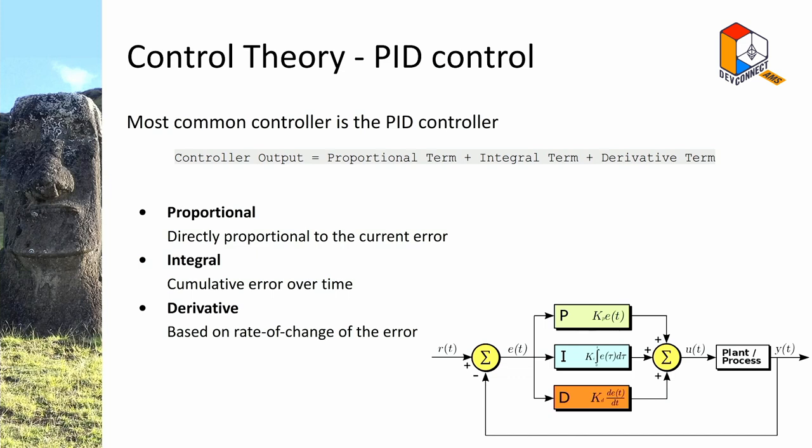If your system is off your target for a longer period of time, you accumulate error and it pulls the lever stronger the longer you stay off target. The derivative term is based on the rate of change of the error, so with the derivative term you can anticipate what you should do and capture the inertia of your system.